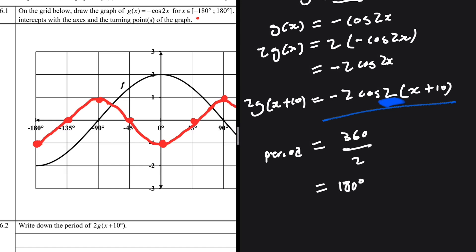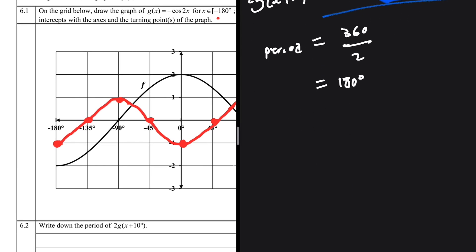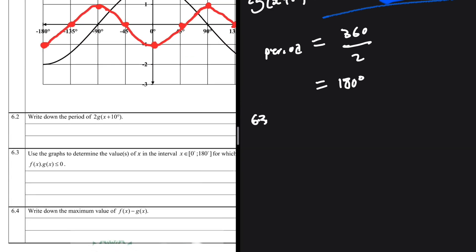For cosine and sine, we always divide 360 by the coefficient of x. If it were just cos(x + 10), it would be 360 ÷ 1 = 360°. If the coefficient were ½, it would be 360 ÷ ½. Whatever answer you get is the period. That's how we determine the period for cosine and sine. That completes 6.2.